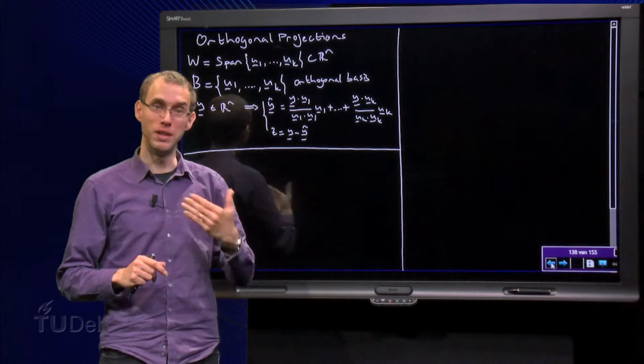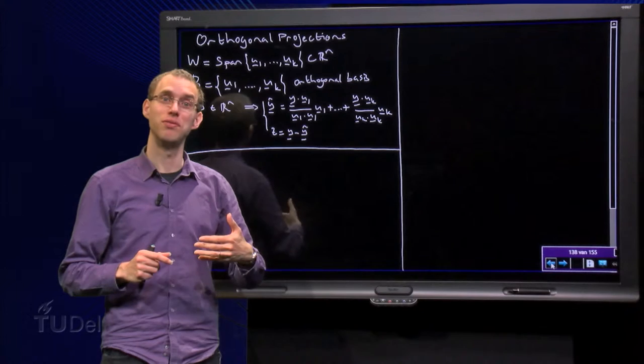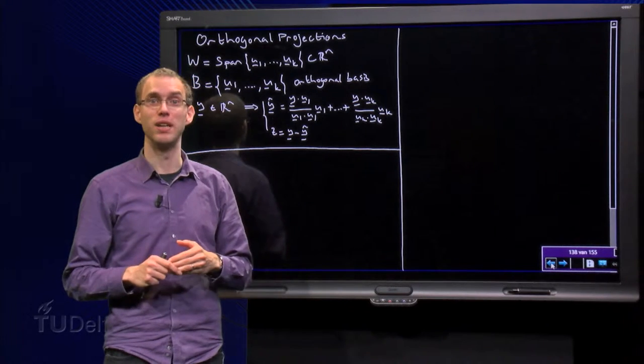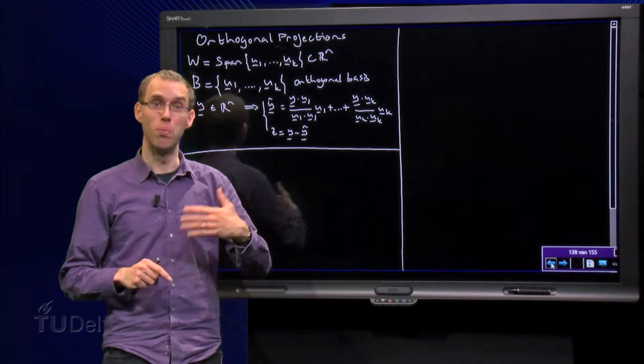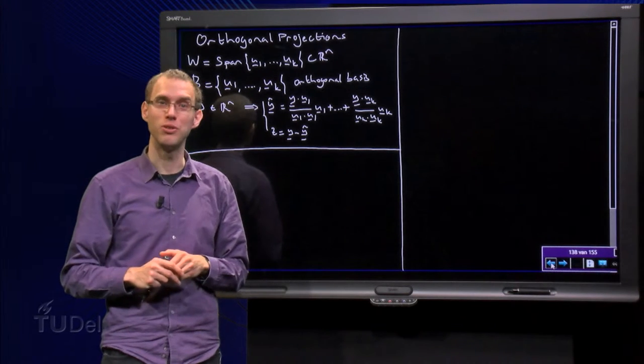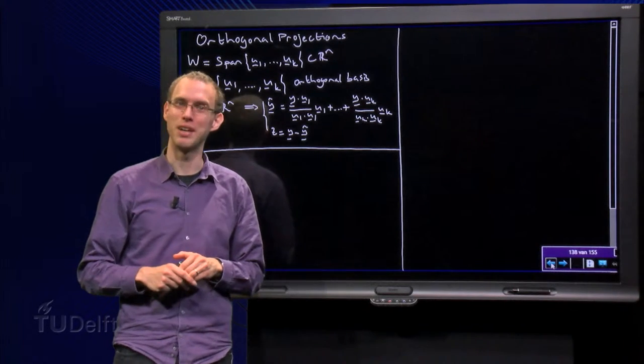This means that the length of z will give us the distance from p to w. So both y-hat and z are pretty useful. Let us see how we can find that.